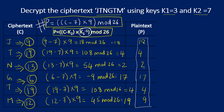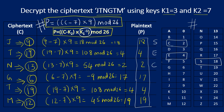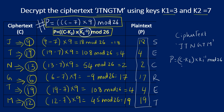We are interested in recovering the plaintext word, not just numbers. Using the mapping table: 18 = S, 4 = E, 2 = C, 17 = R, 4 = E, 19 = T. So the plaintext is 'SECRET'. Using the Affine cipher decryption formula (C − k2) × k1⁻¹ mod 26 with k1 = 3 and k2 = 7, the authorized receiver successfully recovered the word 'SECRET' from the ciphertext 'JTNGTM'.